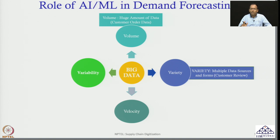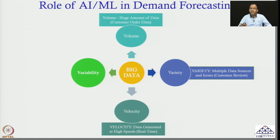Similarly, looking at velocity — data is generated at high speed, in real time. Unlike 10–15 years ago when customers had to go to a retail store, now customers can place orders online. They have the option of e-commerce, Q-commerce, and omni-channel — various avenues to place an order 24/7. That data has to be captured, so on a real-time basis I need to capture data from customers.